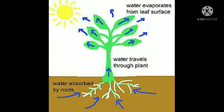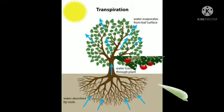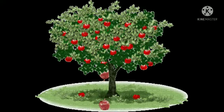The next ingredient needed by the plant to prepare food is water. The roots of plants absorb water from the soil, and the roots have fine tubes that connect all the parts of the plant. Water reaches all these parts of the plant through these tiny tubes.